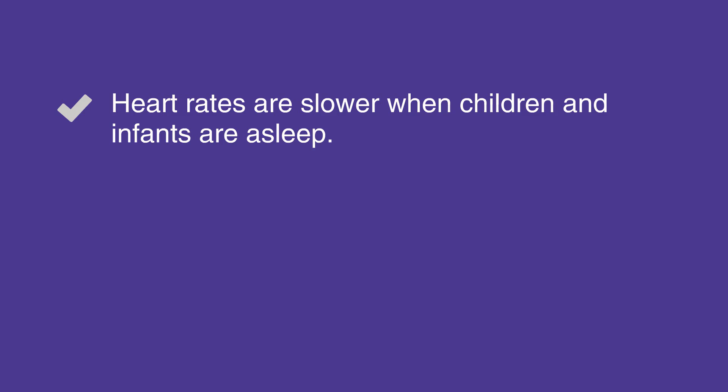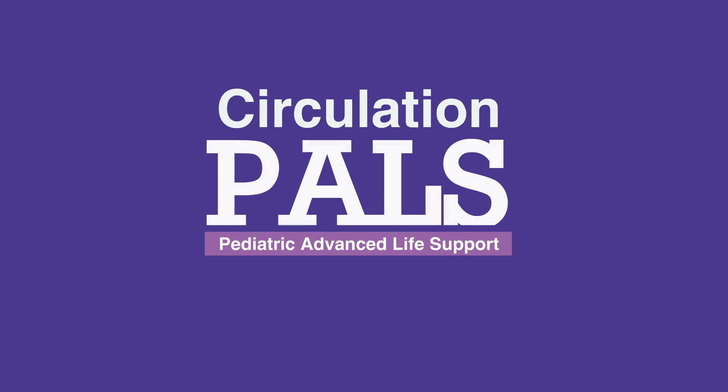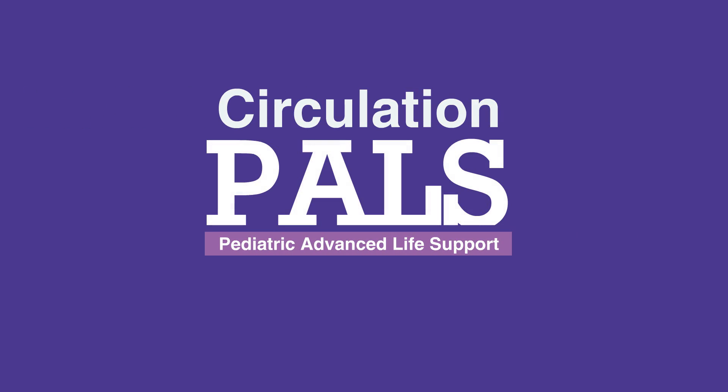Most centers will have acceptable ranges that they use for normal and abnormal heart rates for a given age. While you should follow your local guidelines, approximate ranges are listed in Table 5 in your corresponding PALS manual. This concludes our lesson on circulation. Next, we'll review this ability.